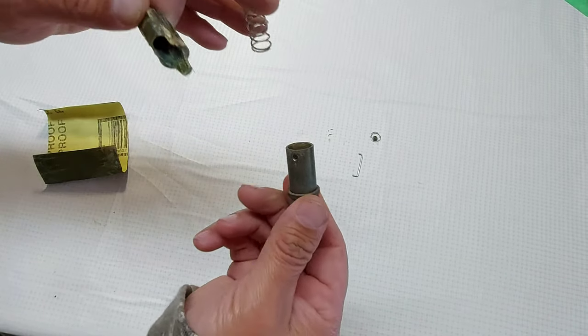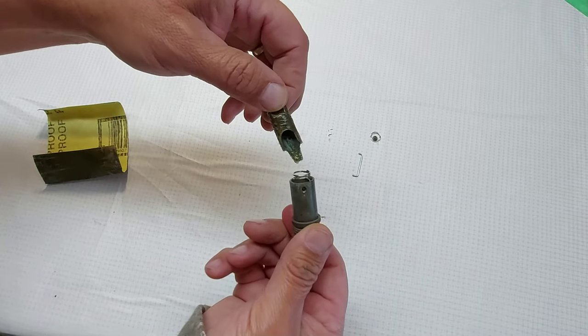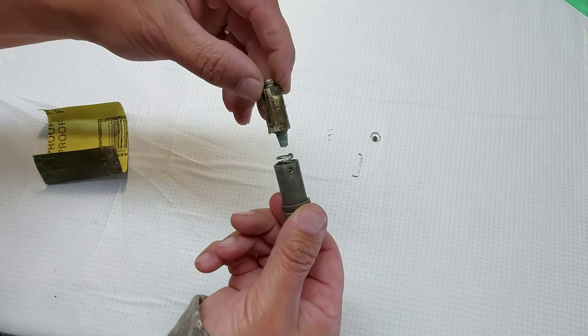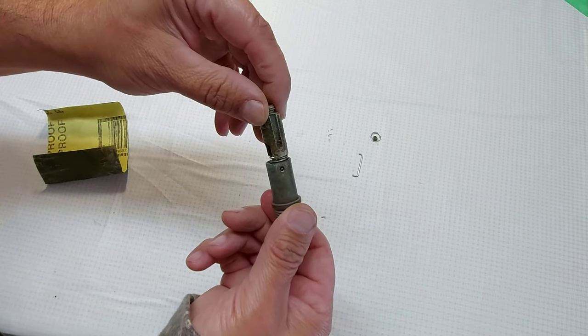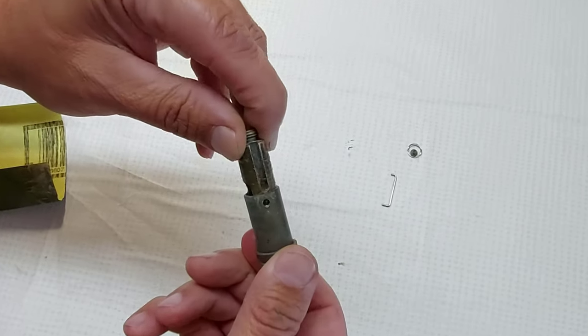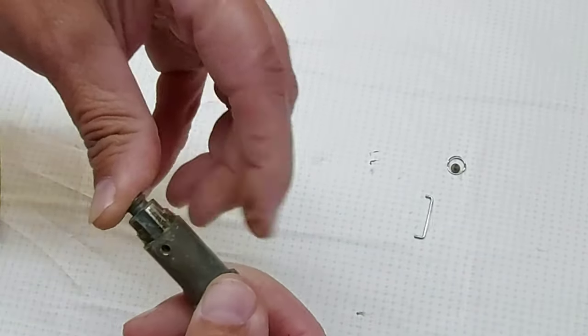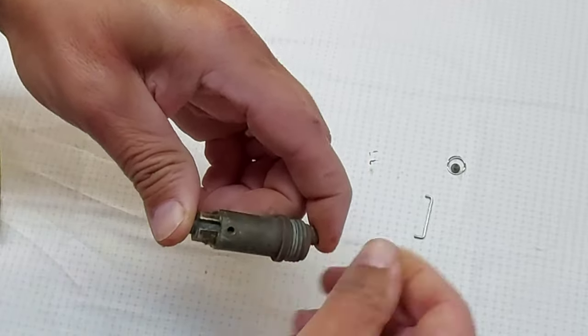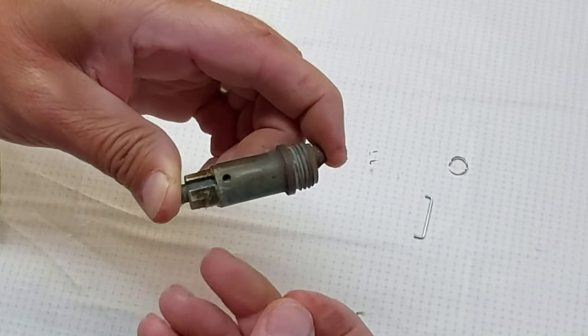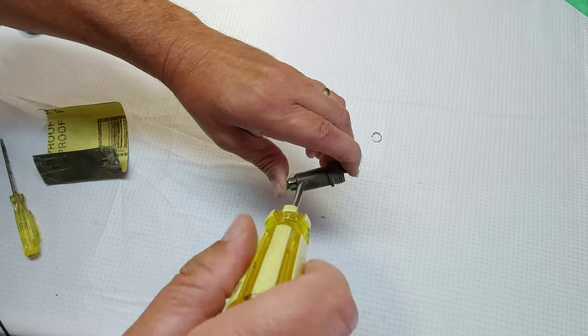So we're going to take the bottom part of the mechanism again. We're going to slip the spring in there. And we're going to put this part in here. Like this. We're going to hold it. And we're going to drop the screw in the hole here. And we're just going to snug that screw up a little bit.